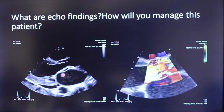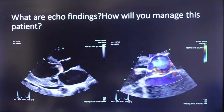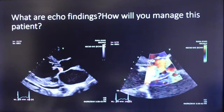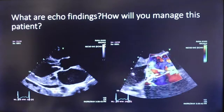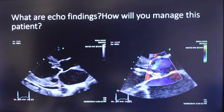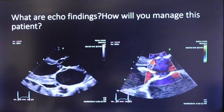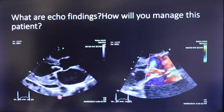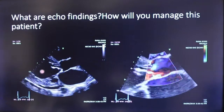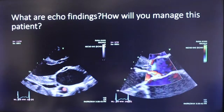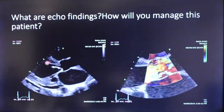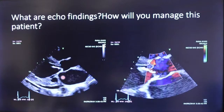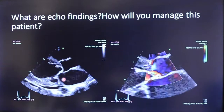Just from this 2D image, you can comment that there is severe aortic regurgitation. Along with that, there is also a mild pericardial effusion.